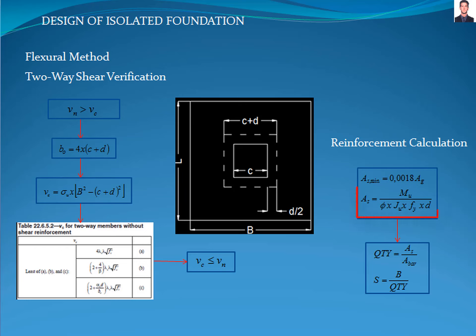Now we calculate the reinforcement area required for the foundation and compare with the minimum area of reinforcement for flexure allowed in section 8.6.1.1 of the ACI 318 standard. If the minimum area is greater than the reinforcement area calculated, we use the minimum area; otherwise, we use the required reinforcement area calculated. The quantity and spacing between bars is calculated with these formulas, where qty is the quantity of bars required and s is the separation or gap.